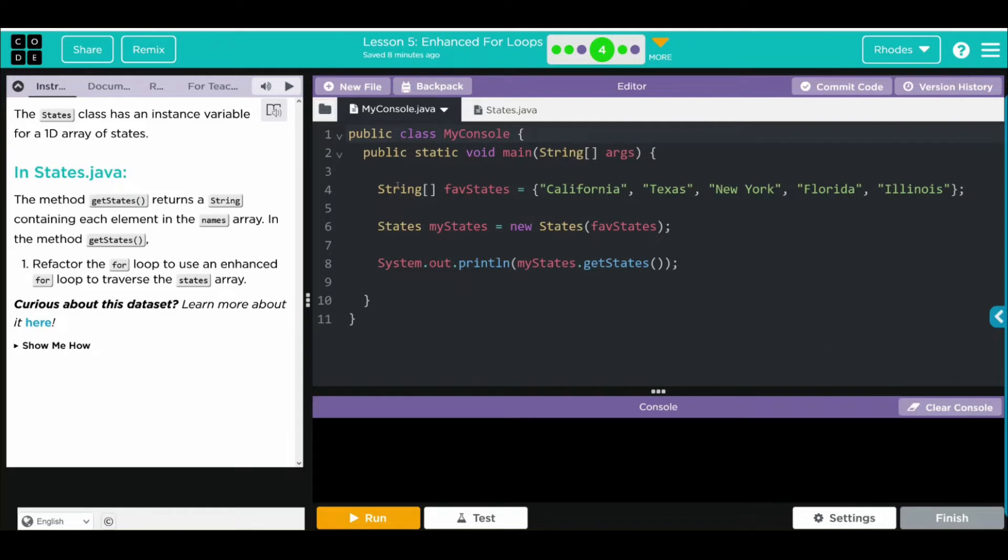Let's take a look at the code in my console. Looks like we have a string array, favStates. We have California, Texas, New York, Florida, and Illinois. We're instantiating a new object, myStates, from the states class. It is passing along this array, favStates. Then we're printing off the myStates object getStates method.